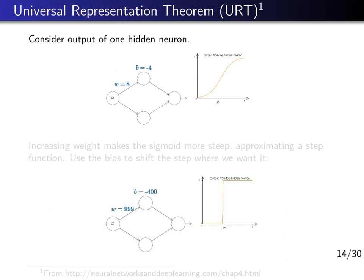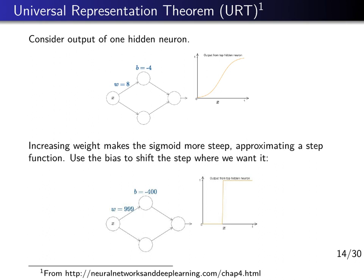By choosing different values of w and b, we can move this sigmoid function around and make it steeper or shallower. Using a larger weight makes the function steeper, and a very large weight makes it step-like. By choosing a suitable bias — for example, minus 400 — we can position where the sigmoid switches from 0 to 1. The switching position is at minus b divided by w, so here it ends up at 0.4. By choosing these parameters suitably, we can essentially mimic a step function and position it at any desired x value.